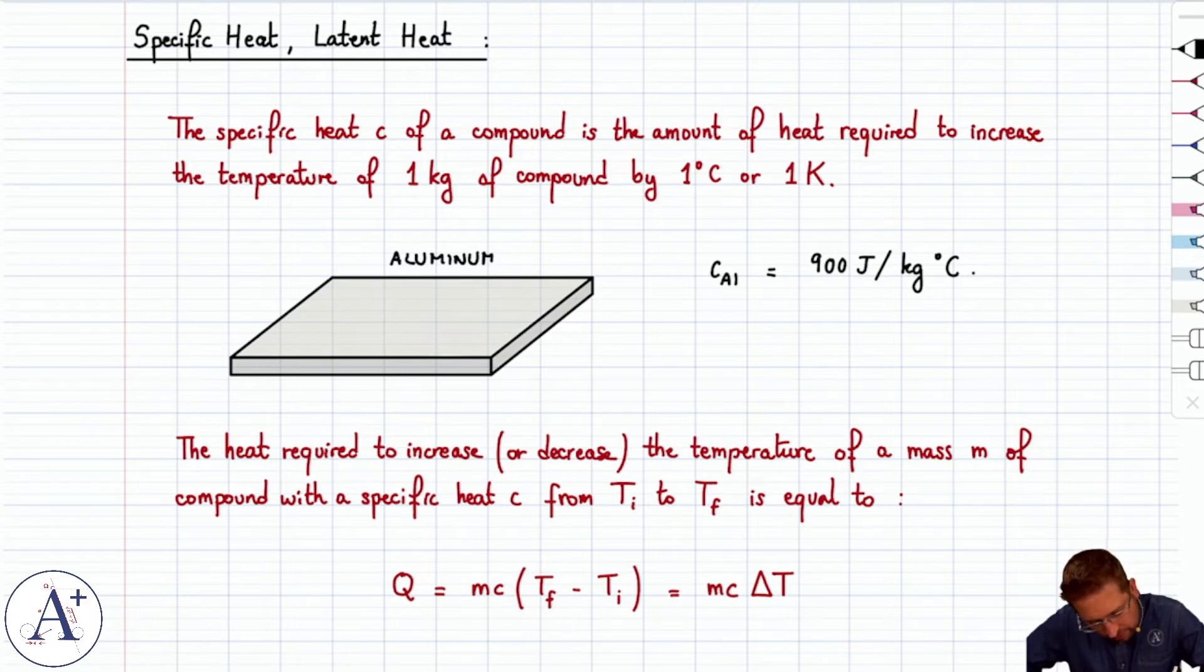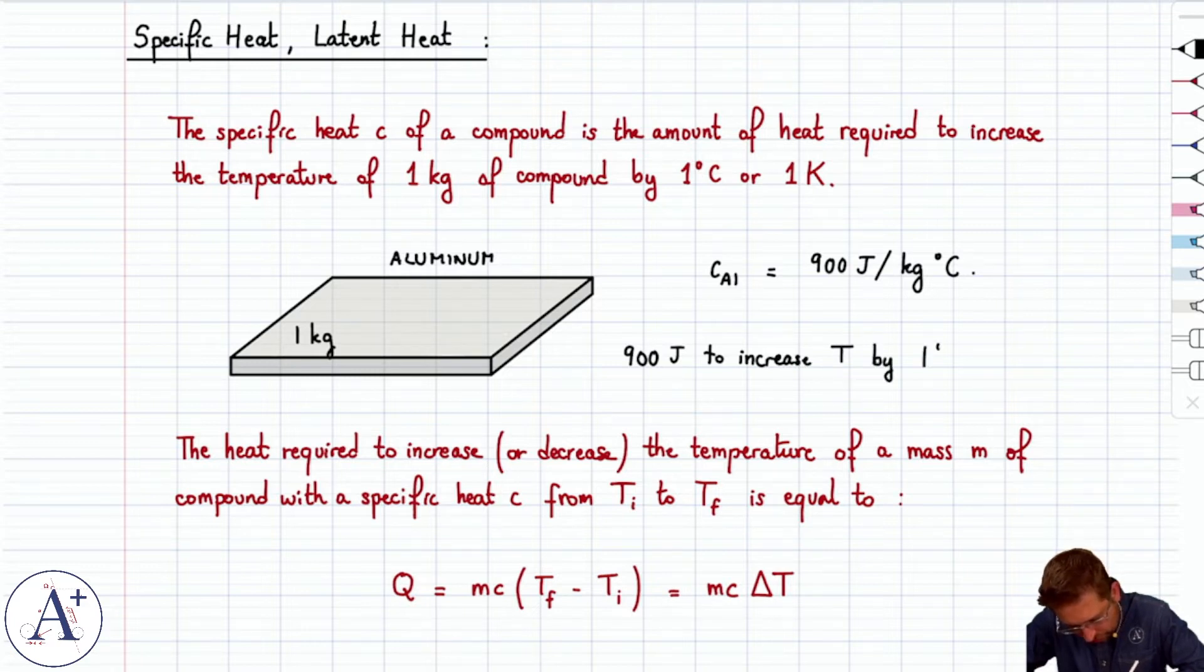And let's say, for the sake of simplicity, that this slab is one kilogram. Well, if you wanted to increase the temperature of this slab by one degree Celsius without melting it, you would have to supply 900 joules. So 900 joules to increase T, the temperature, by one degree Celsius. And so that's the idea of specific heat.